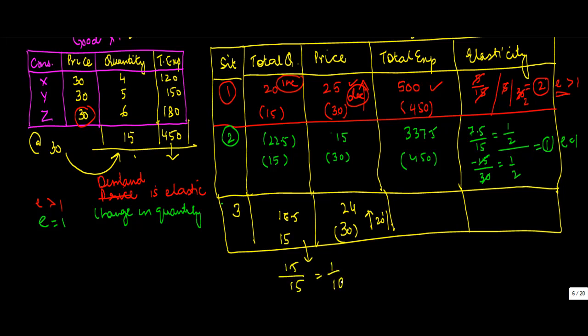Now what's the change in quantity? It's 16.5 minus 15, which is 1.5 divided by 15, or 1 upon 10. The change in price is 6 divided by 30, which is equal to 1 upon 5. And price elasticity is 1 upon 10 divided by 1 upon 5, times 5 upon 1. So your elasticity is equal to 0.5, which is less than 1. Now elasticity less than 1 means this is an inelastic demand.